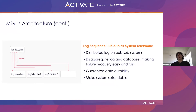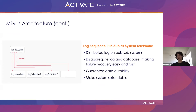The system backbone which holds together all the disparate parts of our system is our log sequence. We use a distributed log on a pub/sub system to handle data movement and node communication in such a way as to leave individual nodes as stateless as possible. By having all our data as a log, we can guarantee data durability, allow for fast failure recovery, and make the system easily extendable.